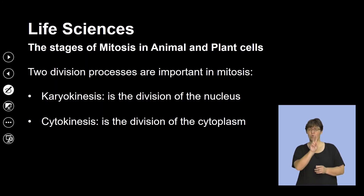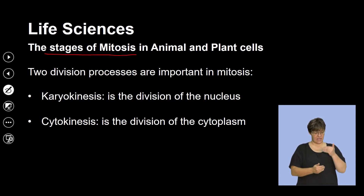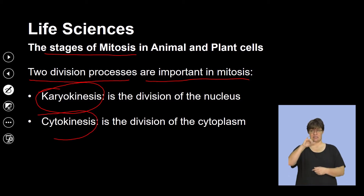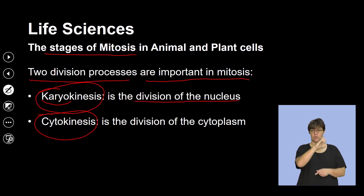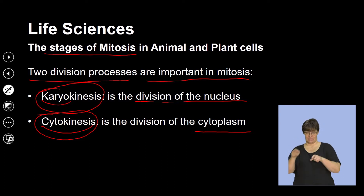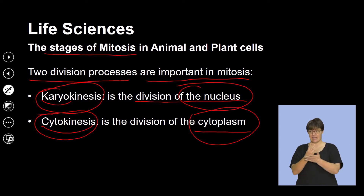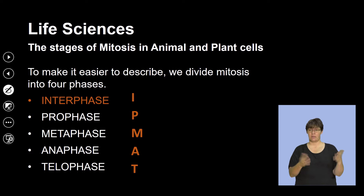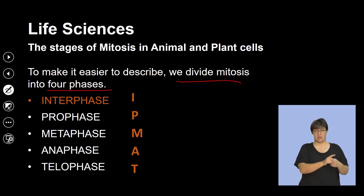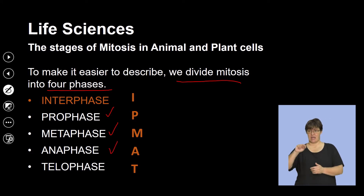Let's look at how the process of mitosis takes place. We're going to look at the different stages in both animal and plant cells. There are two division processes important in mitosis: karyokinesis — the division of the nucleus — and cytokinesis — the division of the cytoplasm. To make it easier to describe, we divide mitosis into four phases: prophase, metaphase, anaphase, and telophase.